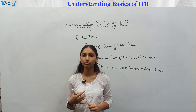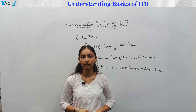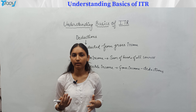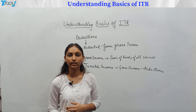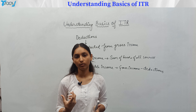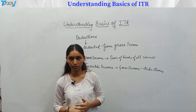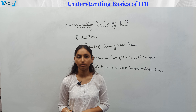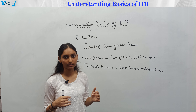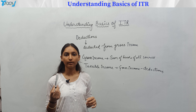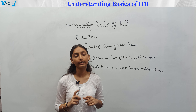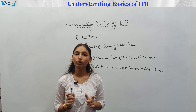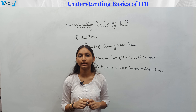Under 80CCD, you can claim deductions for the National Pension Scheme — whether you contribute or your employer contributes. Under 80E, if you have an education loan, you get a deduction on the interest paid. Under 80GG, if you have paid rent in the previous year, you get a deduction. Under 80G, donations made in the previous year are deductible. Under 80TTA, savings bank interest is deductible up to a limit of ₹10,000. The maximum deductible under 80C is ₹1,50,000.